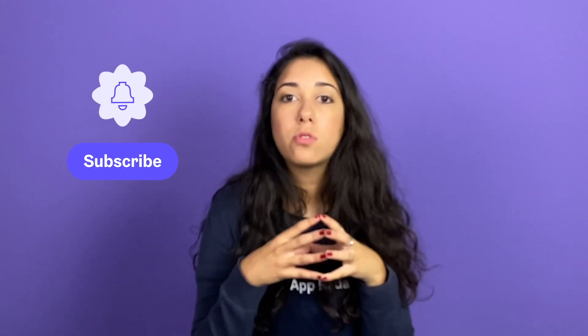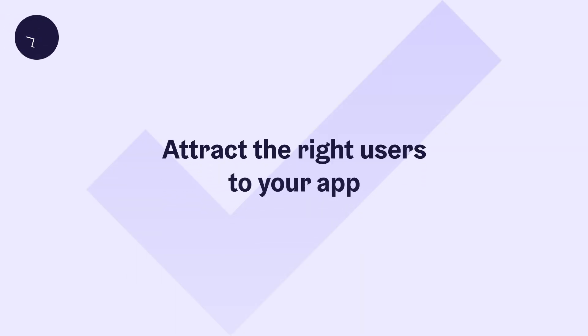You have to assess: is this keyword very important for my app, or is it so difficult to rank for that I should look for a synonym instead? Because you can also place keywords in your description for Google Play — we have a video for that, so check it out later. Why do you want to place these super important keywords in your app title? You want people to know what your app is about as soon as they see your title. You want to attract the right users for your app, so if someone uses a keyword you have in your title to search for an app, they're basically looking for an app exactly like yours.